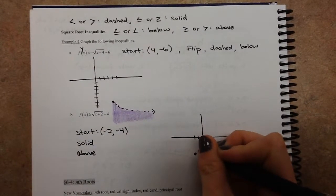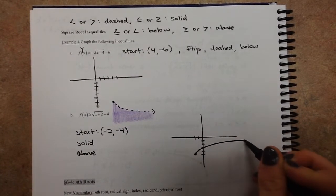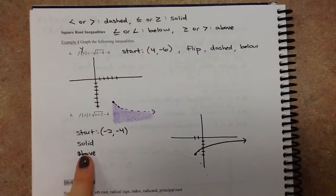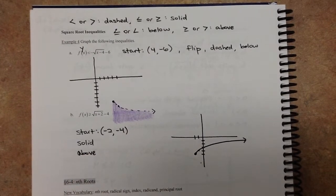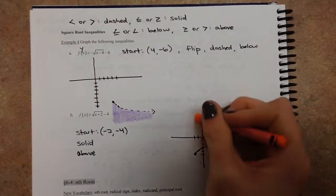It's a solid line, so we can graph it like that. And this means we shade above. So we extend a nice little line from our domain. Remember, we're not going past that. And then you can shade everything over here.